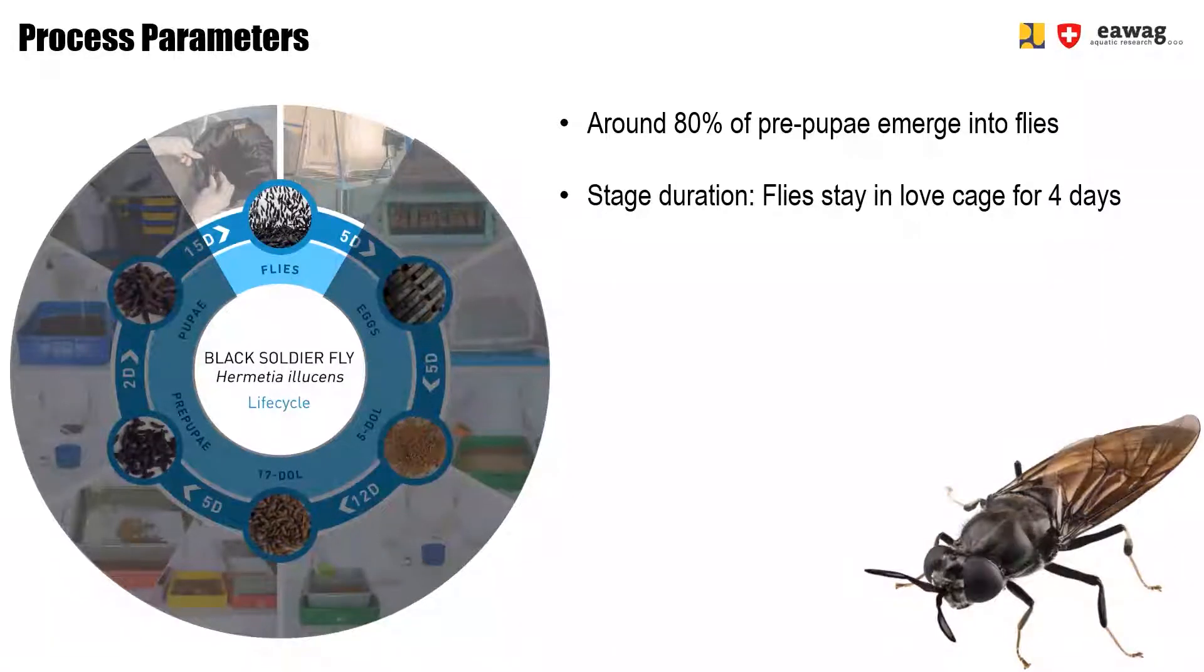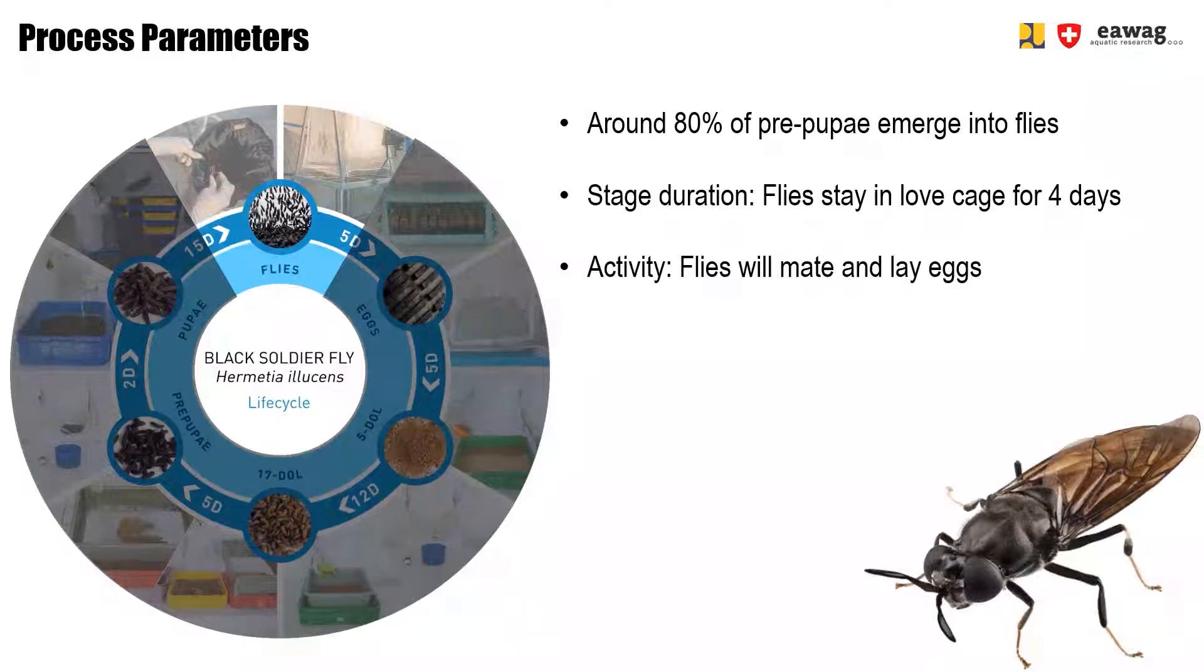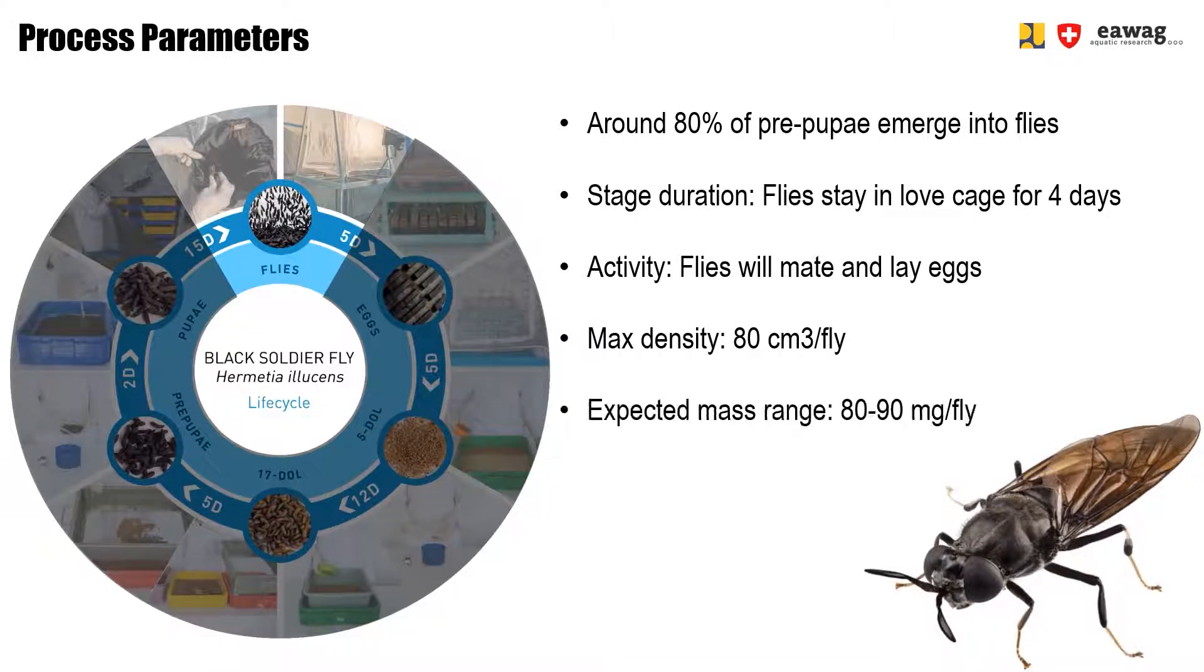The emerged flies then stay for 4 days in the loft cage, where they will mate and lay eggs. The maximum density of the flies in this cage are about 80 cubic centimeters per fly, and the expected mass range of the flies that we harvest from the dark cage is around 80 to 90 milligrams per fly.